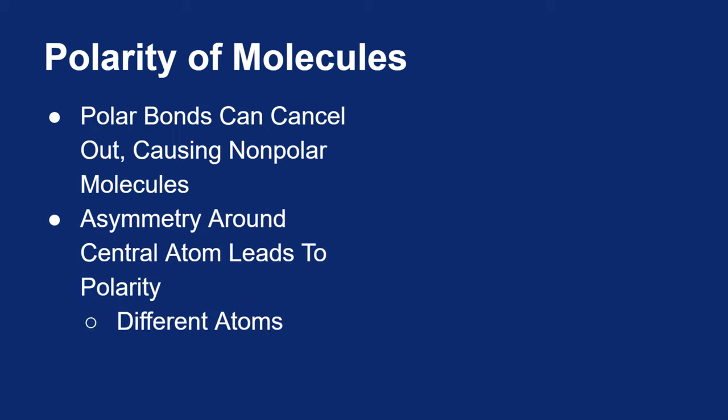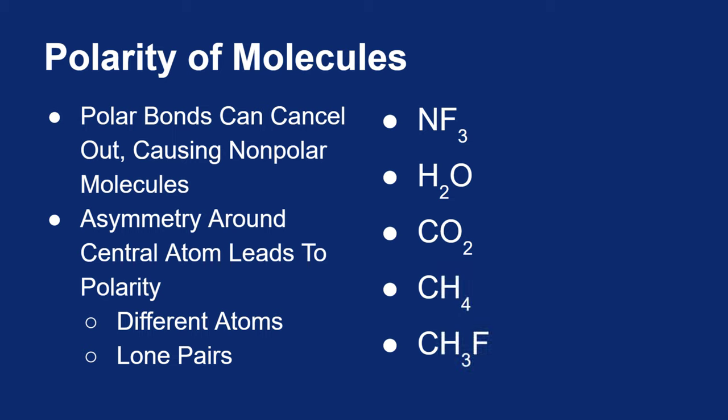We looked at asymmetry of molecules showing different atoms around a central atom, or lone pairs on a central atom. We looked at molecules like nitrogen trifluoride, water, carbon dioxide, methane, and fluoromethane to figure out if they are polar or not. It's been a little while since we've done this, so let's remind ourselves how we can figure out if molecules are polar or not.